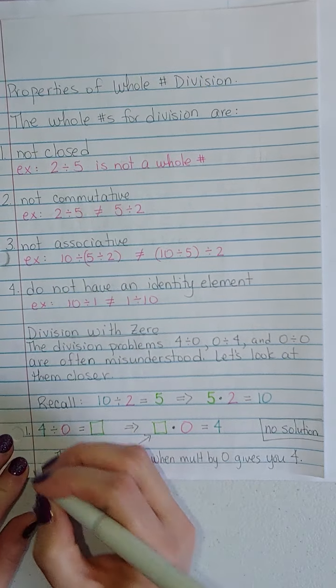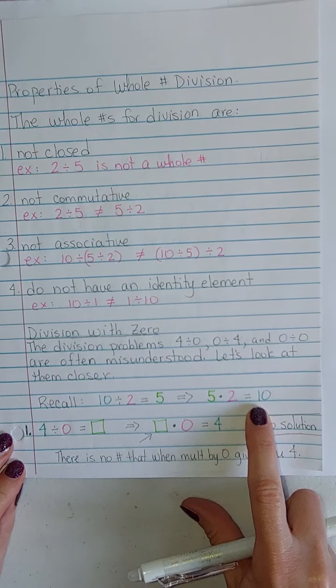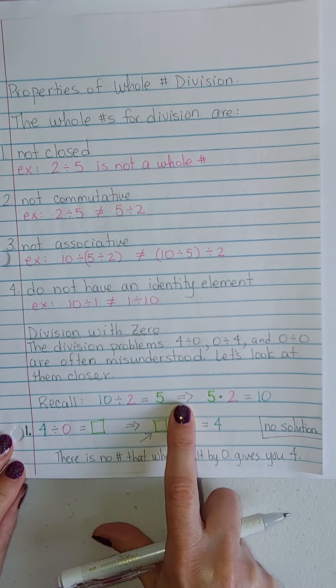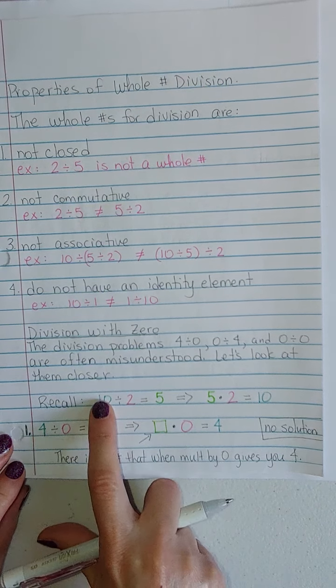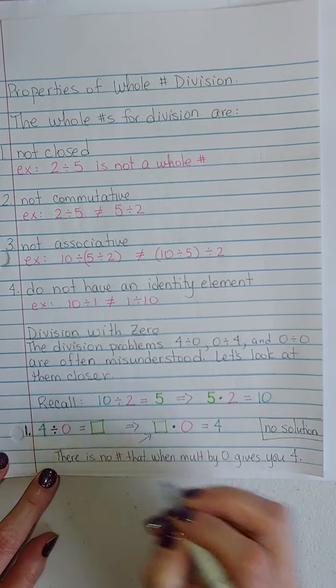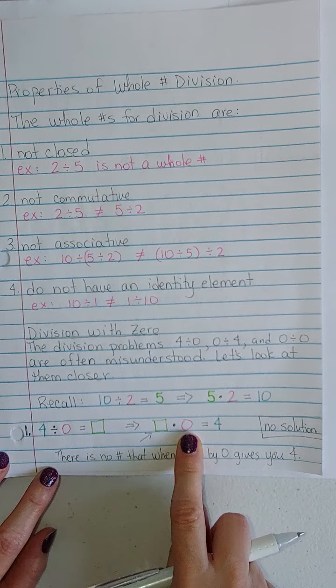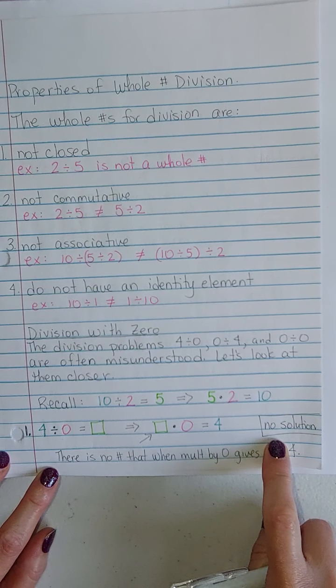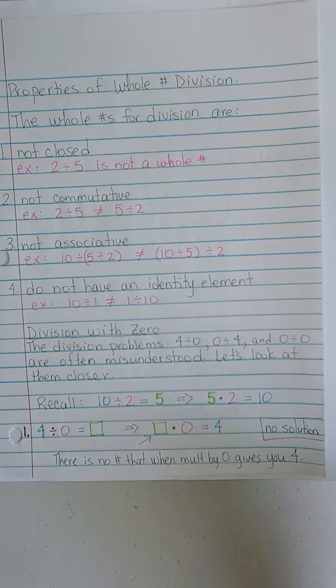Let me show you that I have color-coded this. 10 divided by 2 equals 5 can be written as its related multiplication problem of 5 times 2 equals 10. Keep that in mind. Let's start with 4 divided by 0 is equal to what? That means what times 0 equals 4. So what number times 0 is going to give you 4? There's not anything. There's no number that, when multiplied by 0, gives you 4. We say that one's a no solution or undefined.